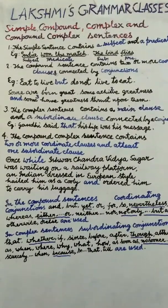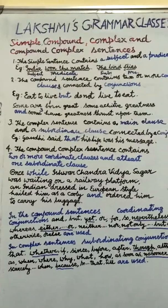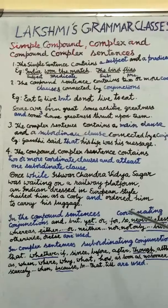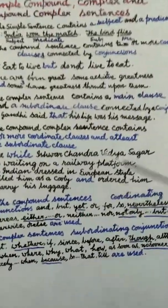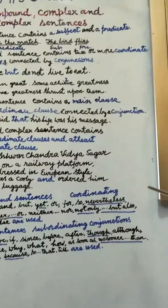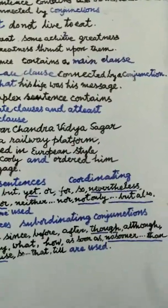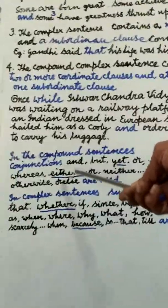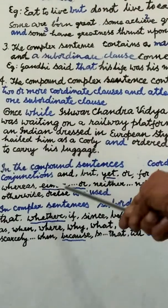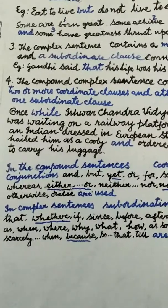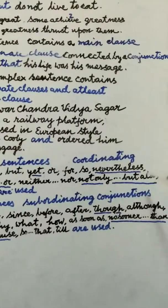Now I am going to give you some examples where the conjunctions are used correctly. 'They are very poor, yet they are honest.' This is a compound sentence. 'He became old; nevertheless, he continued to work.' 'He is either a fool or a philosopher.' 'She is not only an actress, but also a very good singer.'